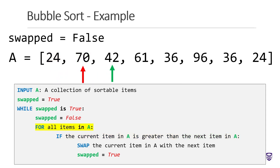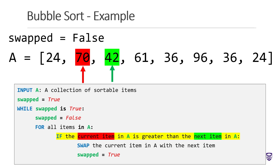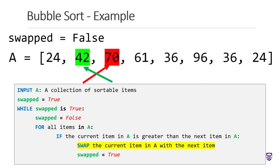Instead, we continue on with the next items in the list. In this case, the current item has a value of 70 and the next item has a value of 42. As 70 is greater than 42, this evaluates to true and we enter the if statement block. The values of the current item and next item in the list are swapped — so 70 and 42 change places. This pushes the largest value, 70, towards the end of the list and the smaller value towards the beginning. So we're slowly getting into sorted order.